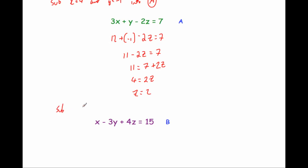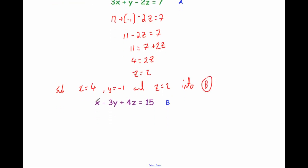Substituting x equals 4, y equals minus 1, and z equals 2 into equation B: x is 4; minus 3y — 3 times minus 1 is minus 3, so we're taking away minus 3; plus 4z — 4 times 2 is 8. That should equal 15. Let's check: 4 minus minus 3 is 7, plus 8 is 15. 15 equals 15 — we know we're right!